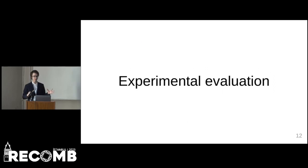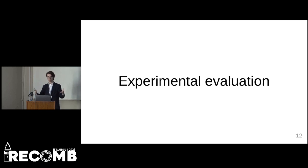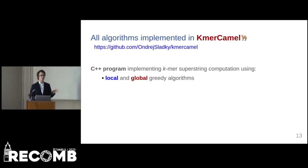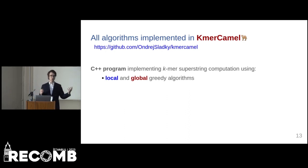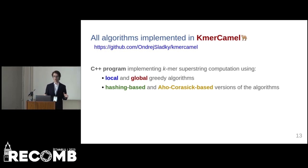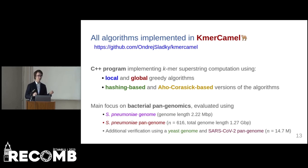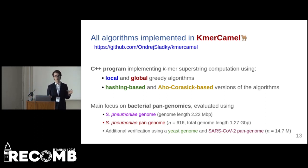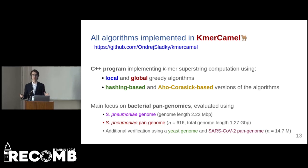This concludes the theory of masked superstrings. We implemented the aforementioned algorithms in the C++ program KmerCamel. We implemented the local and global greedy algorithms for approximating superstrings for k-mers in two different variants — one based on integer hashing of k-mers and the second based on an Aho-Corasick automaton. We focused mainly on bacterial pangenomics and evaluated on the pneumococcus genome and pangenome, additionally verifying results using yeast genome and COVID pangenome.